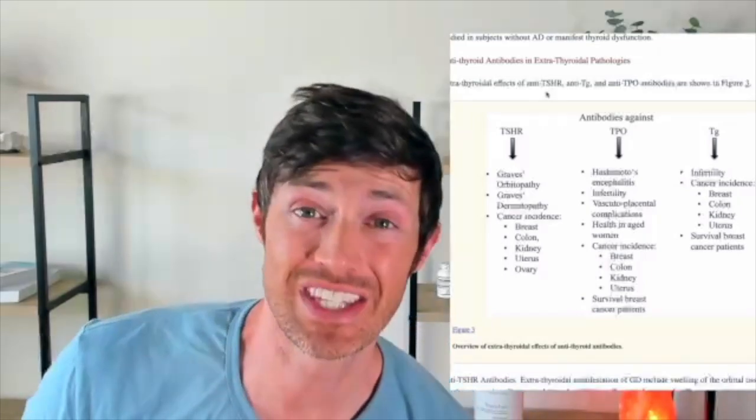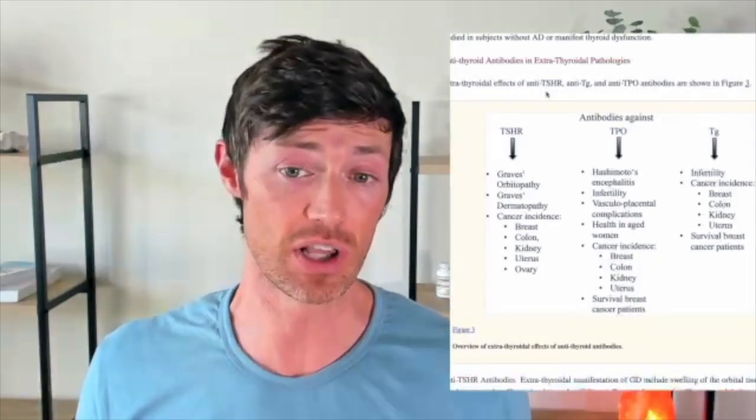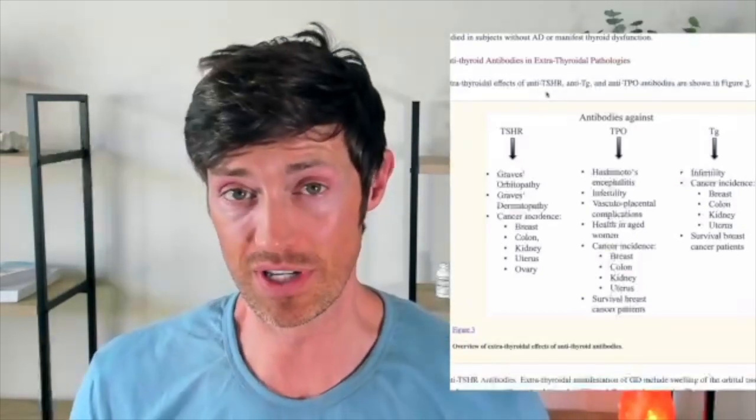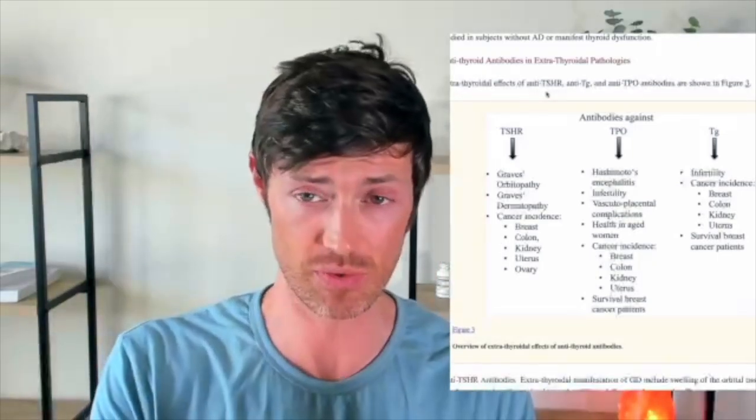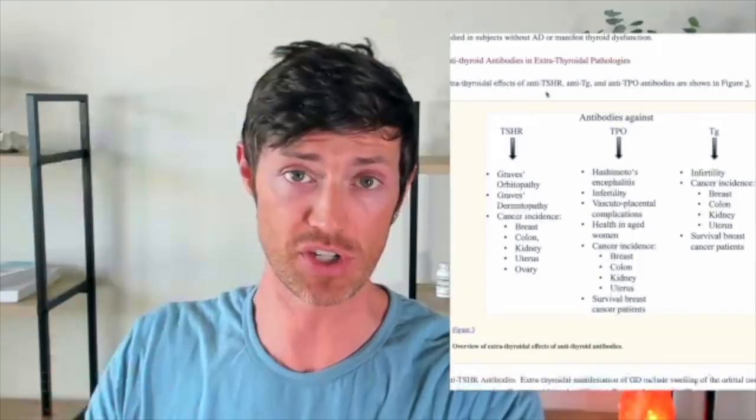Then we have a Graves' skin condition called dermatopathy, which tends to occur in the shins and the tibial area, and is usually the result of inflammation localized in the skin. We also know that patients with elevated TSH-R antibodies have an increased risk of cancer in the following sites: breast, colon, kidney, uterus, and ovaries as well. So there is definitely a connection between all these antibodies and cancer risk, and also some other tissues like the skin, the brain, and the uterus — which is why we see issues with infertility.